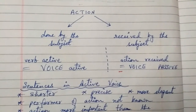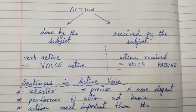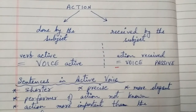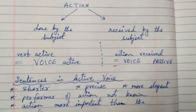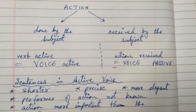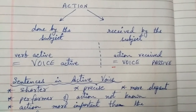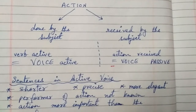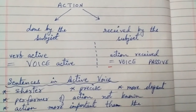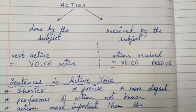Any action in the world is either done by someone or received by someone. When you show it in a sentence, the verb is either presented as done by the subject or received by the subject. When the action is done by the subject, the verb is said to be active and the sentence is in active voice. When the action is received by the subject, the sentence is said to be in passive voice.